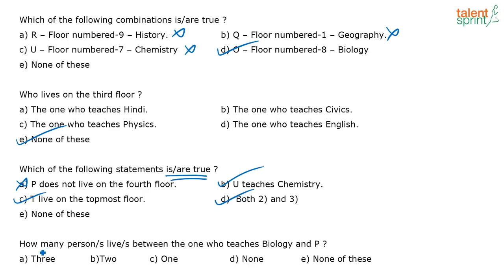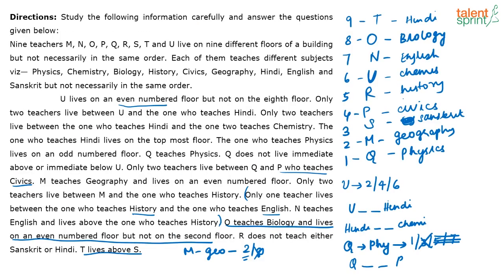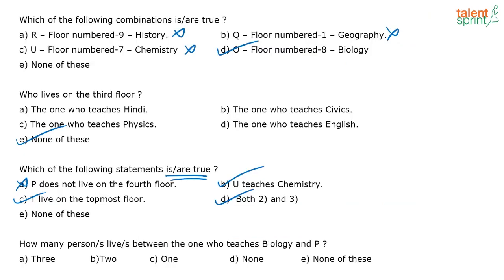Fourth question: how many persons live between the one who teaches biology and P? Biology is on floor 8 and P is on floor 4. The people in between are on floors 7, 6, and 5 — so there are three people between them. The correct answer is option A.